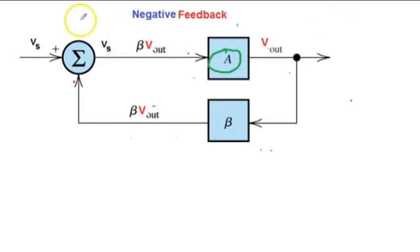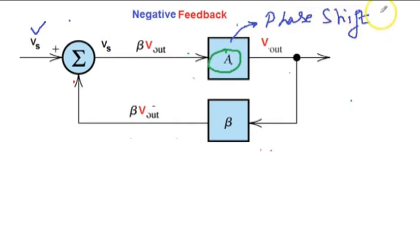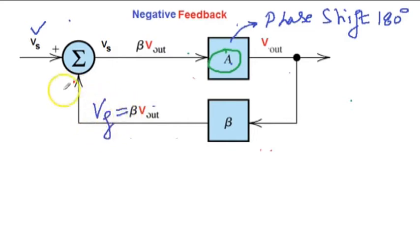VS is coming in. The amplifier is A. If it is a common emitter configuration, it gives a phase shift of 180 degrees to the voltage signal. The output signal passes through the beta network and becomes beta times Vout. This is the feedback signal, and it gets subtracted from VS to become the input signal to the amplifier.